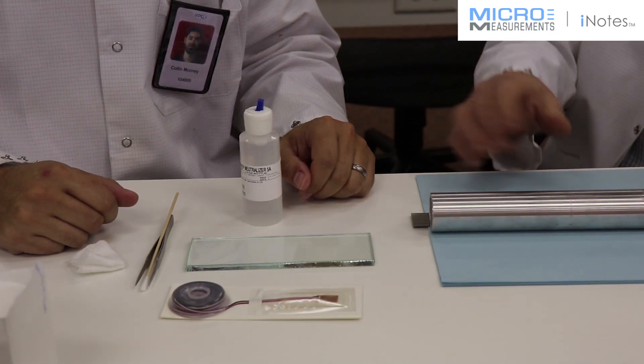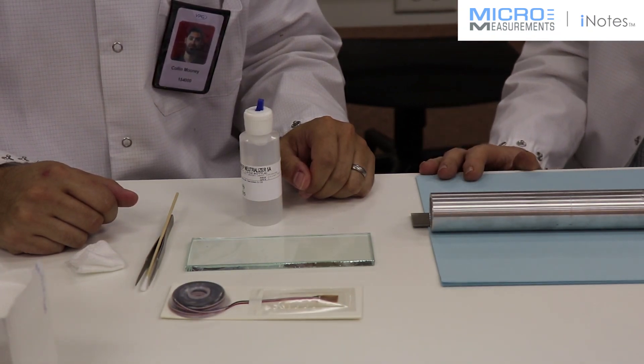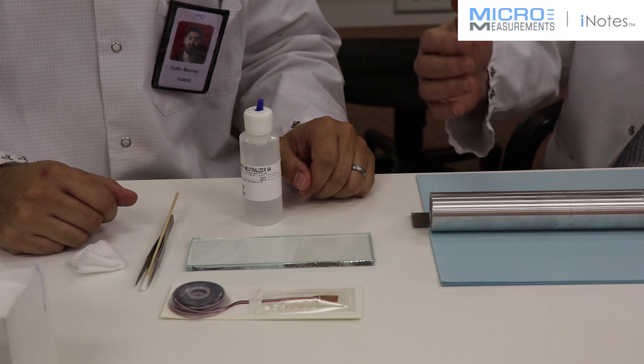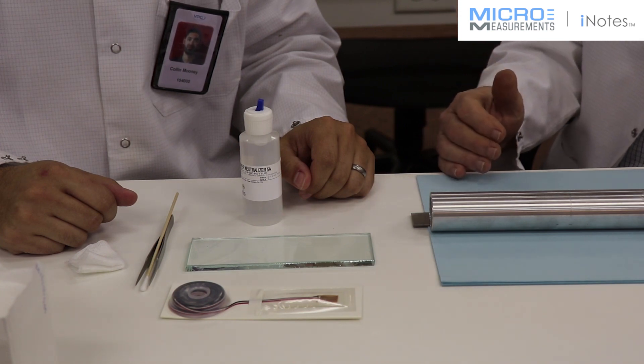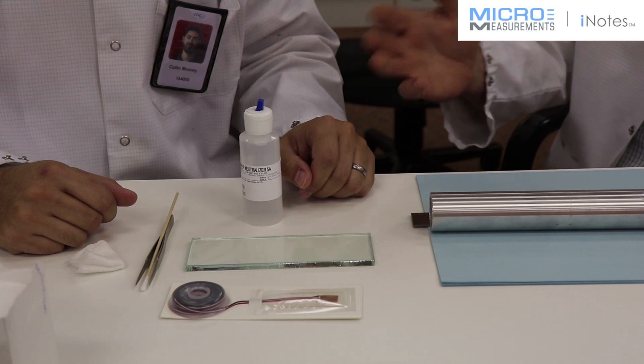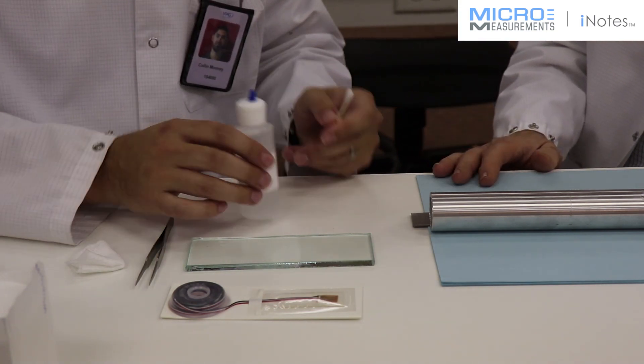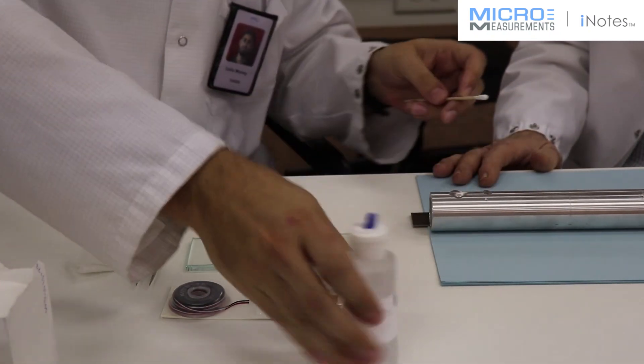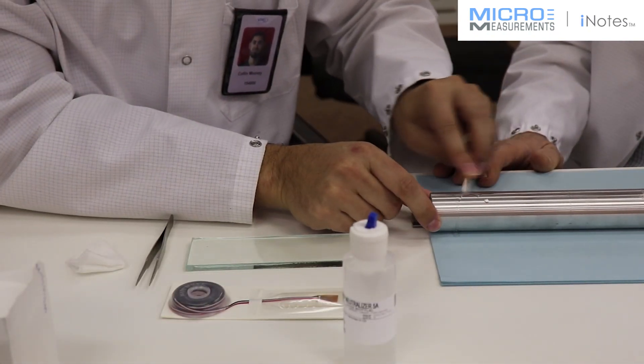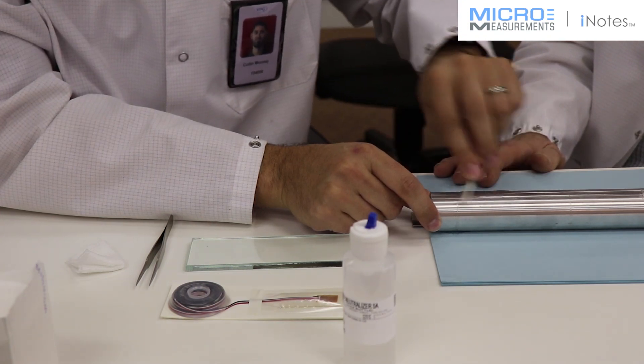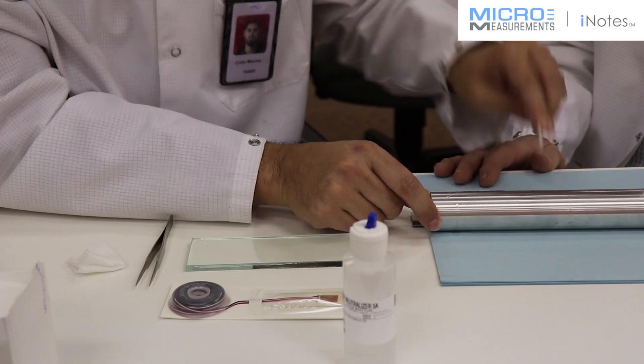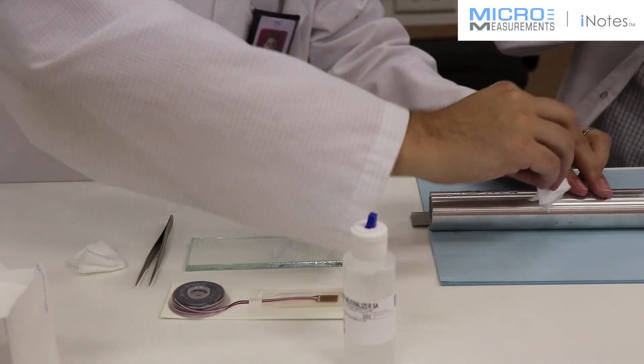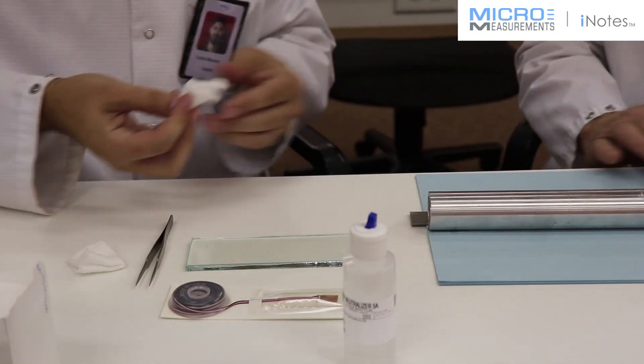We've completed our surface preparation on our second installation on this shaft, which would include wet-abrade with Conditioner A, degreasing it first, wet-abrade with Conditioner A, and a scrub with Conditioner A. Now we're going to scrub it with Neutralizer 5A to get the pH of the surface down or up to the value of either neutral or slightly basic. Colin's going to take some of the Neutralizer 5A, and in the area where the gauge is going to end up, we're going to clean the surface. Take a dry gauze sponge, fold it in quarters, and absorb that excess Neutralizer 5A.